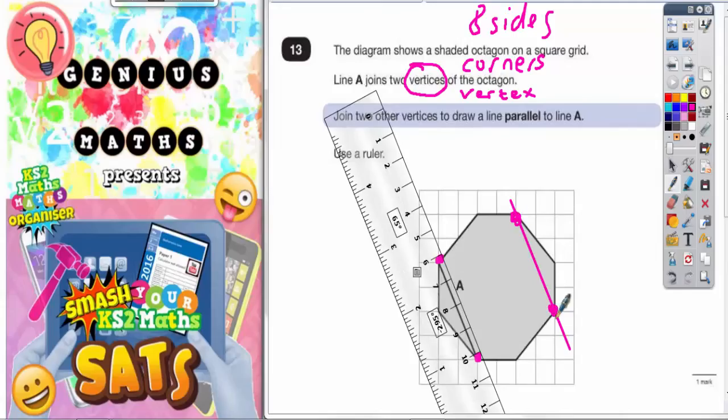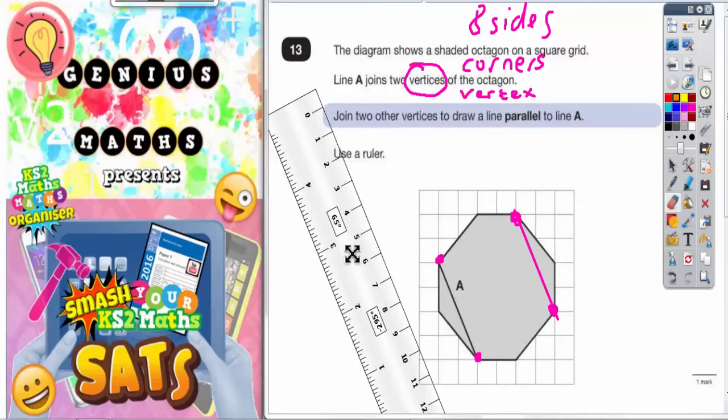There's a line that joins those two corners. You didn't really need to extend the line so we'll just rub that out. So that's part A.